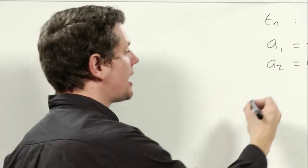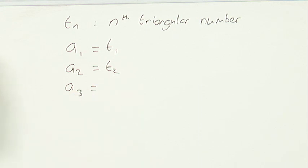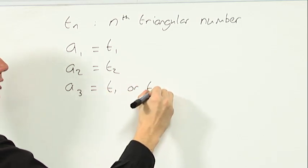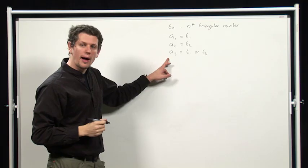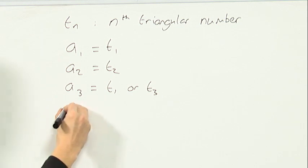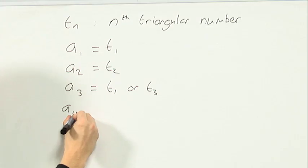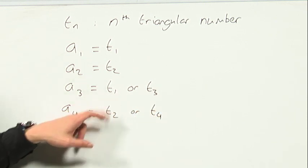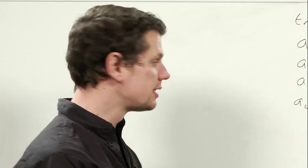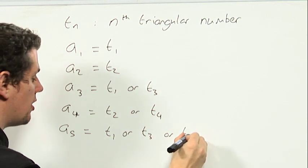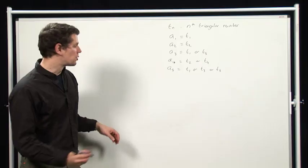Then after that, a3 can be the next triangular number up or the next triangular number down. So a3 can either be T1 or T3. Now a4 can be the next triangular number up or down from any of these, except that we can't go below T1. So a4 can be T2 or T4. That's the next triangular number up from T1 or up or down from T3. Similarly, a5 can be the next up or down from any of those, so it can be T1 or T3 or T5. This pattern, of course, continues.